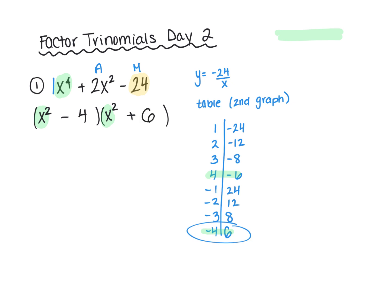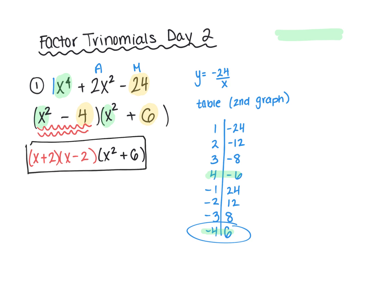And that is how you break up the trinomial — negative 4 times positive 6 multiplies to negative 24. But you should recognize that with these types there might be more factoring. I want to draw your attention to x squared minus 4 — you should see that that's actually a difference of two squares. So we can break that down to x plus 2 and x minus 2. And then, to finalize our answer, we also bring down the x squared plus 6. So this would be our final answer.